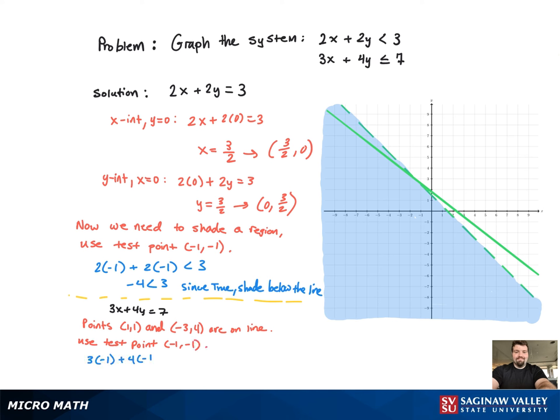Again, we're going to try shading a region. So we use the test point negative 1, negative 1 again. And it looks like we get a true statement. So we're going to shade below the line because negative 1, negative 1 is below the line.